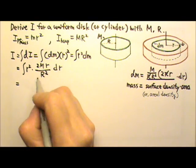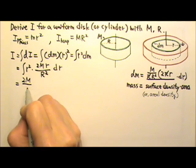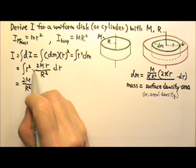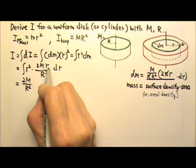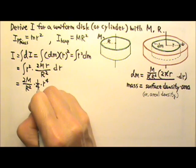We can take out the constant 2m over big R². We can take it out of the integral and then we combine these here. We get r³. When we integrate r³, we get r to the 4th times 1/4.